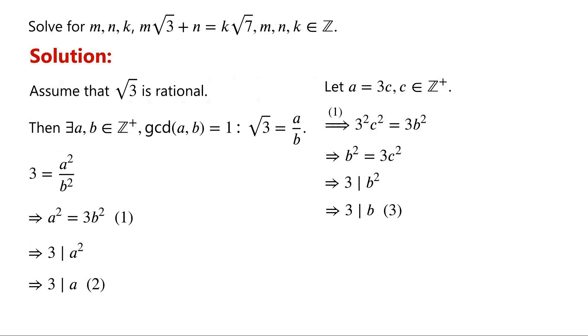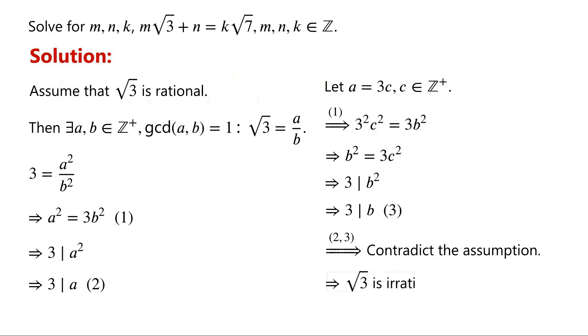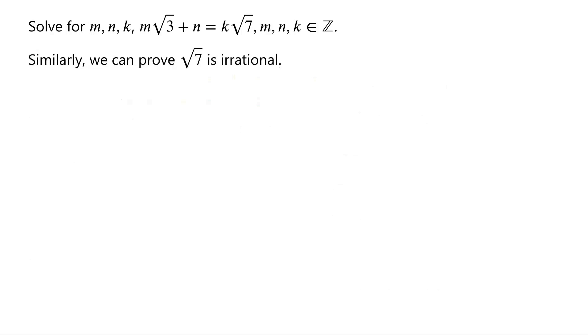Since 3 divides a and 3 divides b, this contradicts the assumption that a and b are coprime. Hence, √3 is irrational. Similarly, we can prove that √7 is irrational.